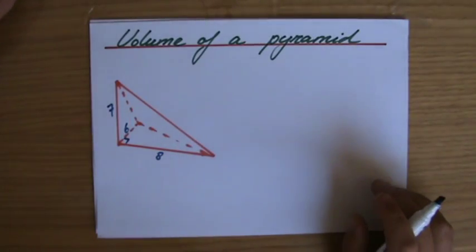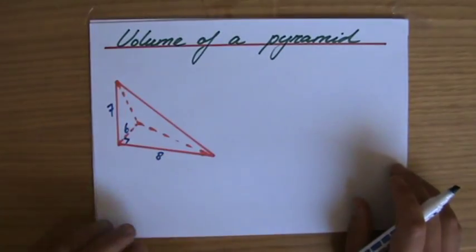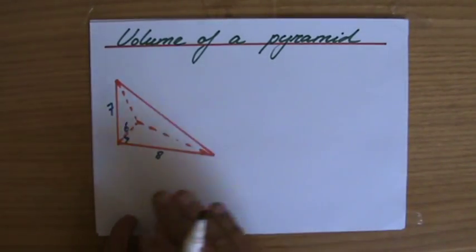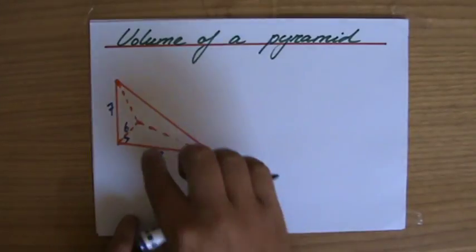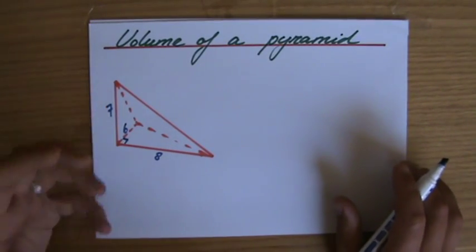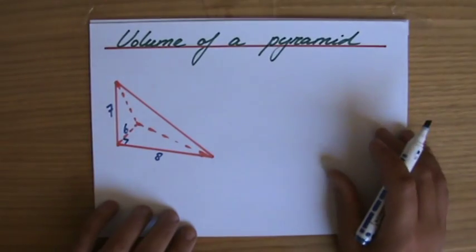Yes, it's very good to see you again. We're talking about the volume of a pyramid and I've sketched a pyramid here, which is a triangular base pyramid, because the base is a triangle and we have to calculate the volume, the capacity of this pyramid.